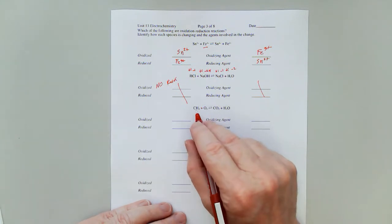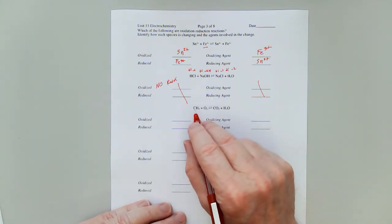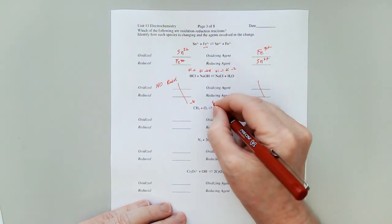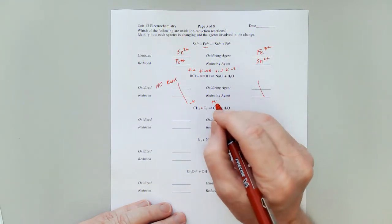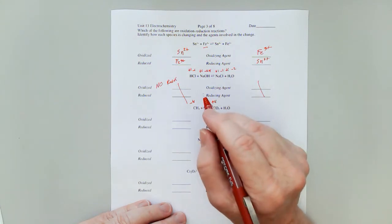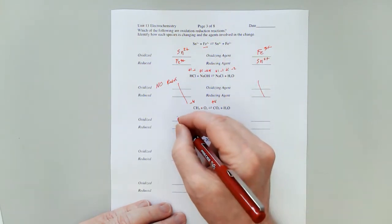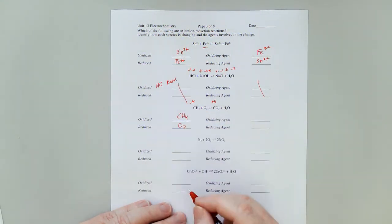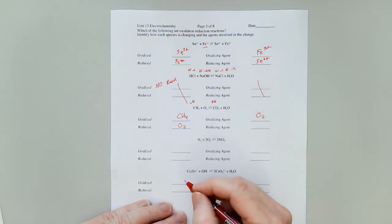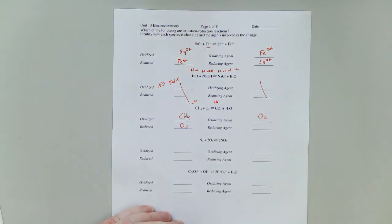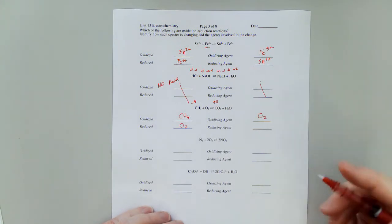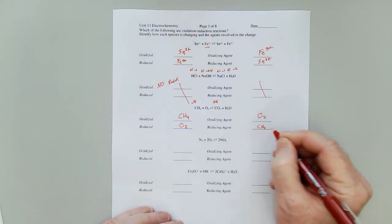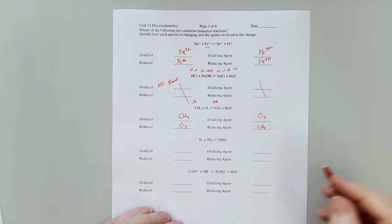Now here, CH4, this carbon is a negative four. And over here in CO2, that carbon is a positive four. That means the carbon in CH4 is losing electrons. So we would say CH4 is oxidized and O2 is reduced. The oxidizing agent would be oxygen. Yeah, that makes sense. Oxygen is an oxidizing agent. So the CH4 is what's being reduced here.